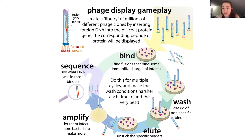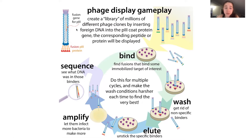We make the bacteria do the hard work for us. The bacteria are going to make lots of copies of this phage. Then we can look and see what DNA was connected to the binding protein. The protein on the surface is going to be the one instructed by the DNA we inserted. But remember, this is typically a random library, so there can be tons and tons of different stuff in here, and we don't know what it is.